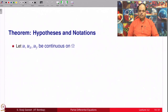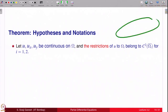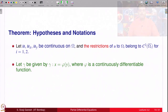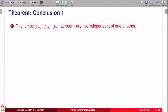Let u, u_x, and u_y be continuous on omega, and the restrictions of u to omega_i be C^2 functions since we want them to be solutions to the PDE. We need omega_i bar because we are going to consider jumps in second order derivatives — those derivatives must be meaningful on the curve gamma. If u is C^2(omega_1 bar), second order derivatives of u are defined on gamma. Now, the jumps in u_xx, u_xy, and u_yy are not independent of one another — they are interrelated.